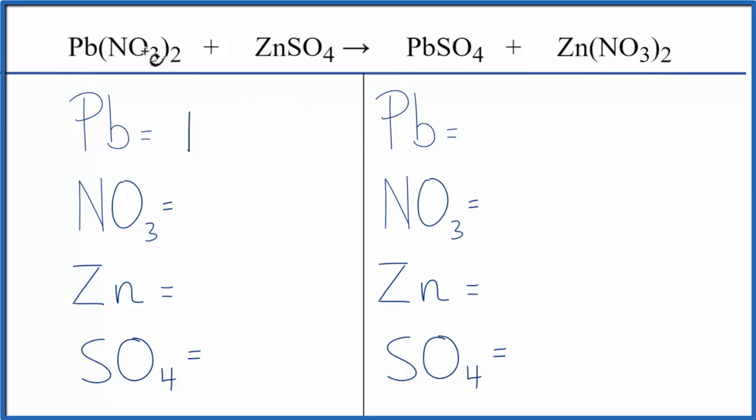We have one lead, and then NO3, that's called the nitrate, a polyatomic ion. We have one here, and it stays together in the chemical reaction. We have a nitrate again over here. We're going to call that just one item. I have one nitrate times the two, so we have two of them.